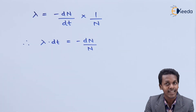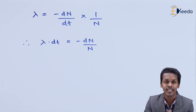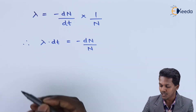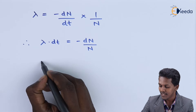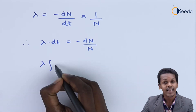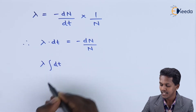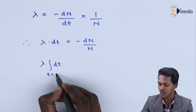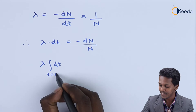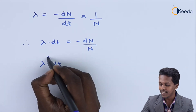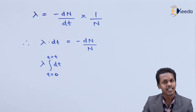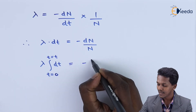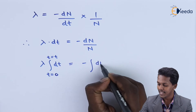Since dn is derived from n, we can integrate this equation with certain limitations. Integrating both sides with definite limits: the left side integrates dt from t equals 0 to t equals t, and the right side integrates minus dn/n. Suppose the initial concentration is N₀ and the final amount of substance remaining after a particular time is n.